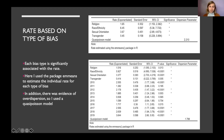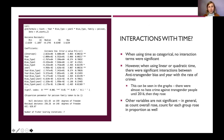When examining interactions with time, using categorical year in my final model yielded no significant interactions. However, using linear or quadratic time, anti-trans bias crimes always had a significant interaction, which makes sense because they only began appearing in the data around 2014–2015. The other variables were not significant, suggesting that as overall rates rose, each group's rate rose in proportion as well.